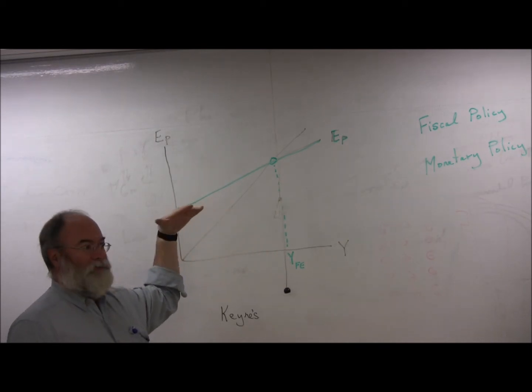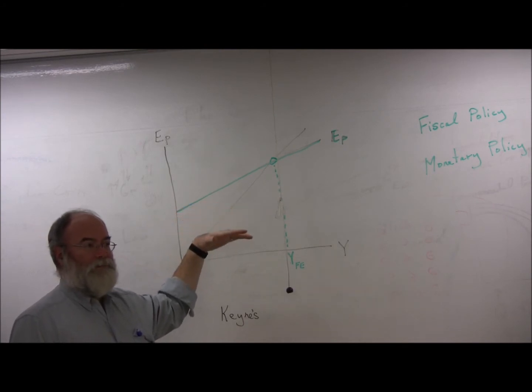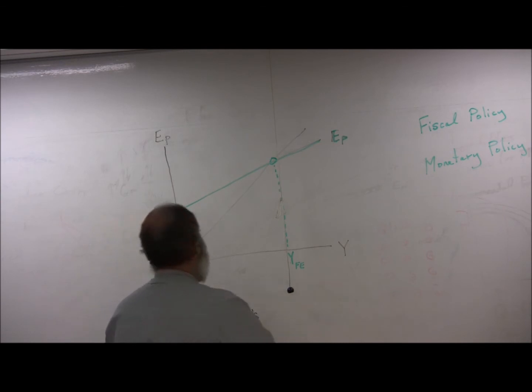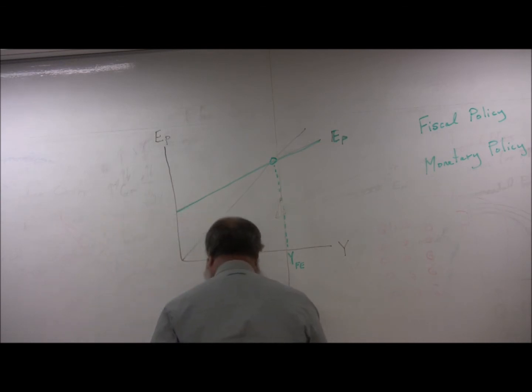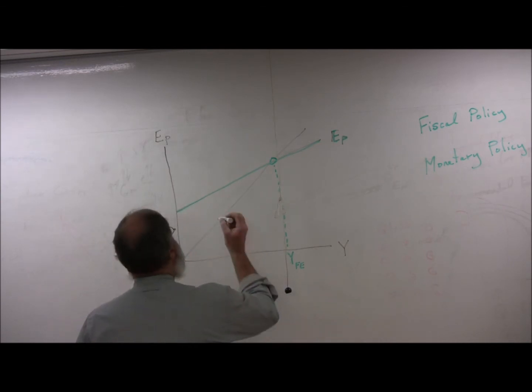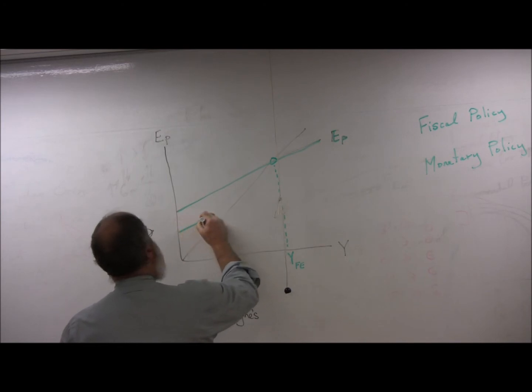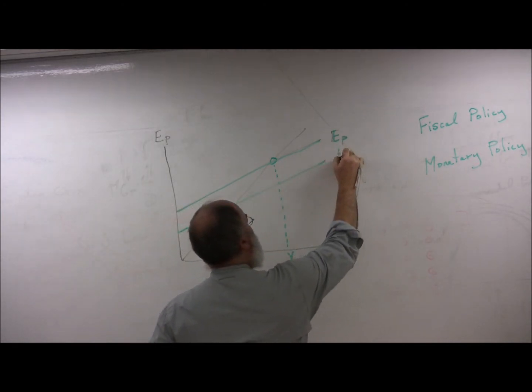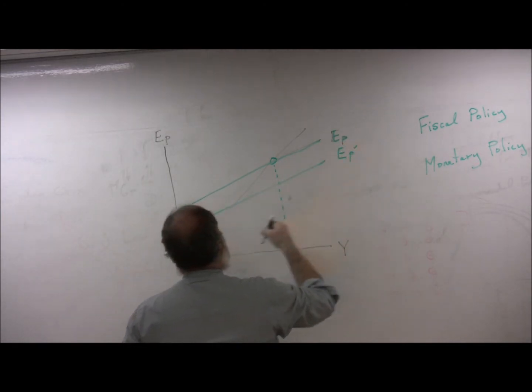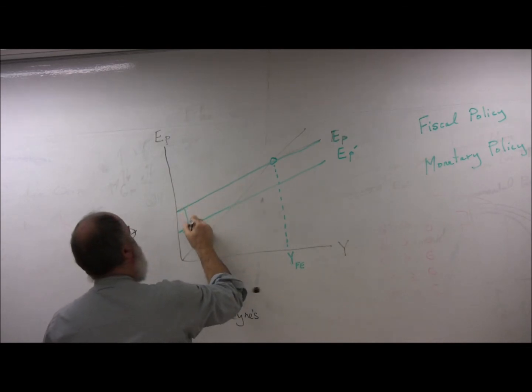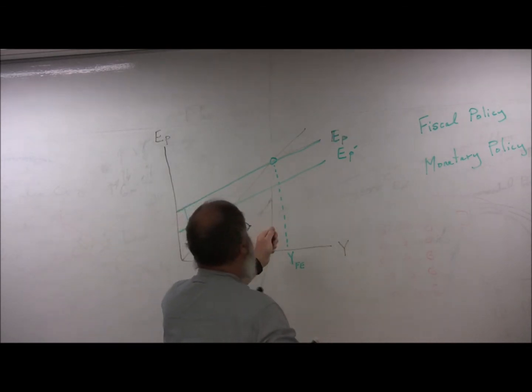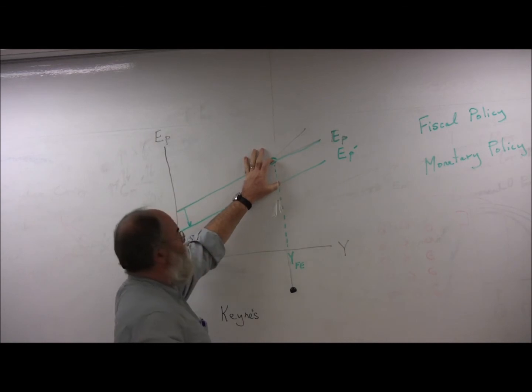Because EP is not particularly stable, we won't stay there. And so he said it is very possible that EP will decline, creating what he called a recessionary gap. This is the gap.